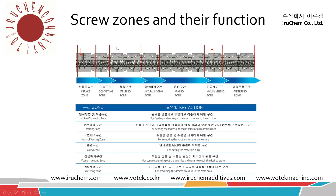Now we see screw zones and their functions. First zone, we have the intake zone where the material comes in. And we have the conveying zone, which transfers the material to the melting zone. And there is the melting zone, which melts the raw materials. And after melting, we have a natural venting zone where gas preliminarily goes out from the extruder.